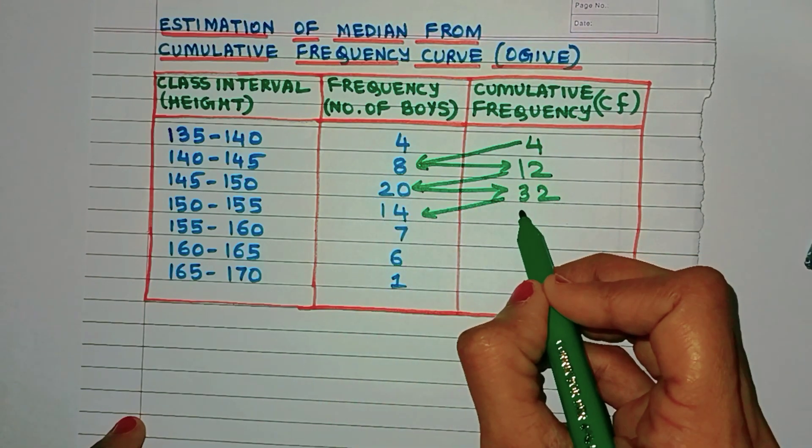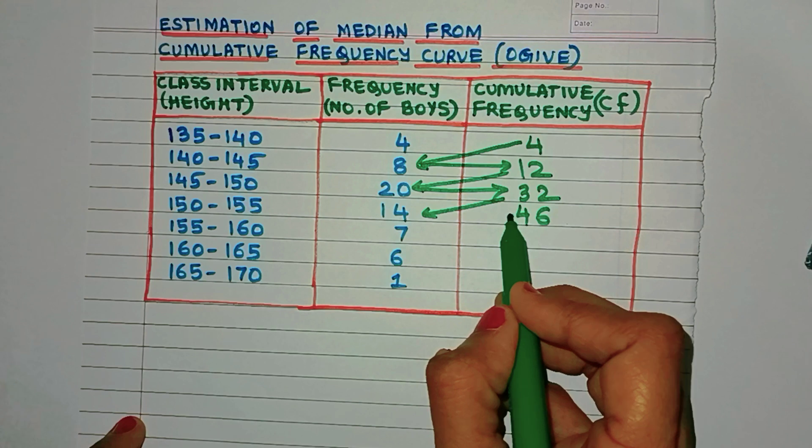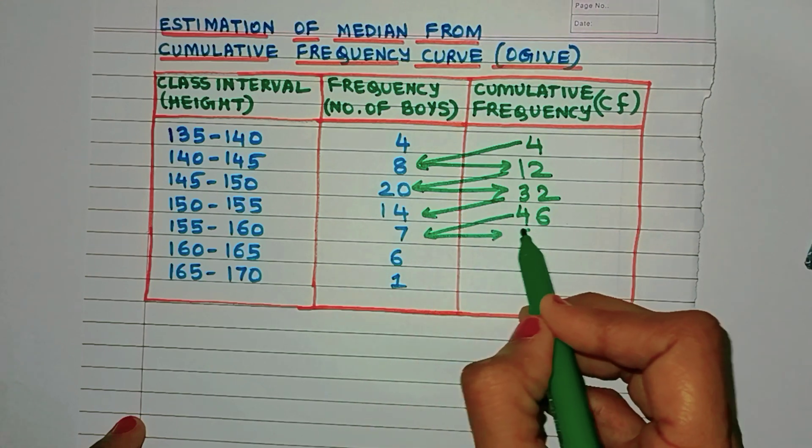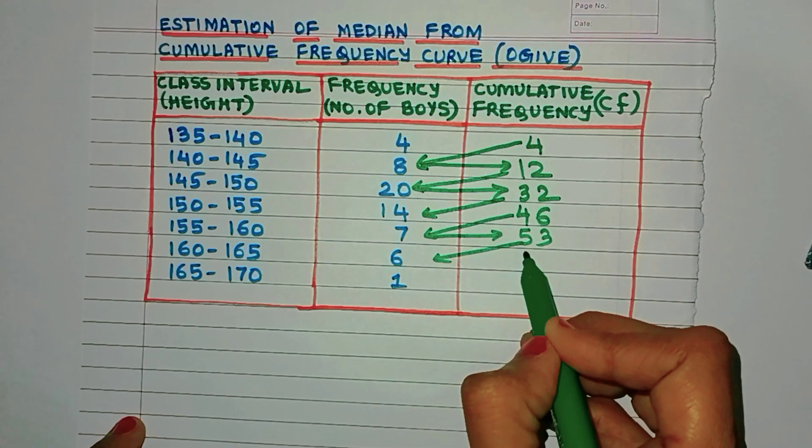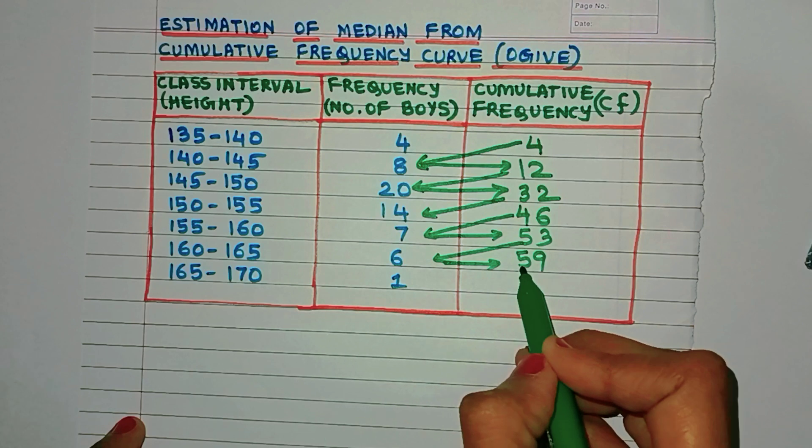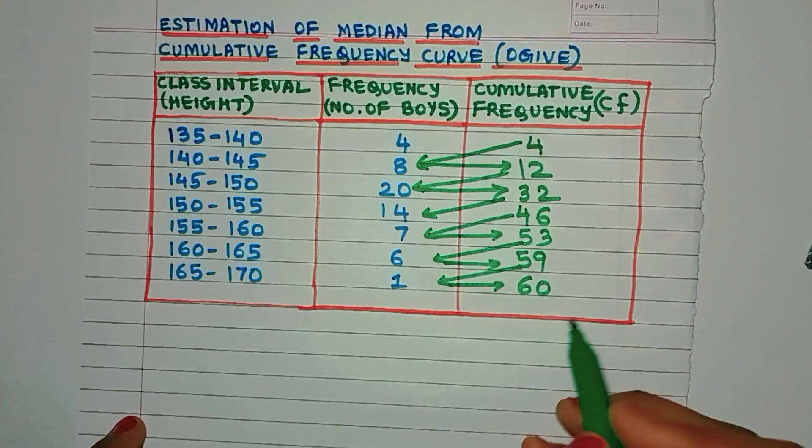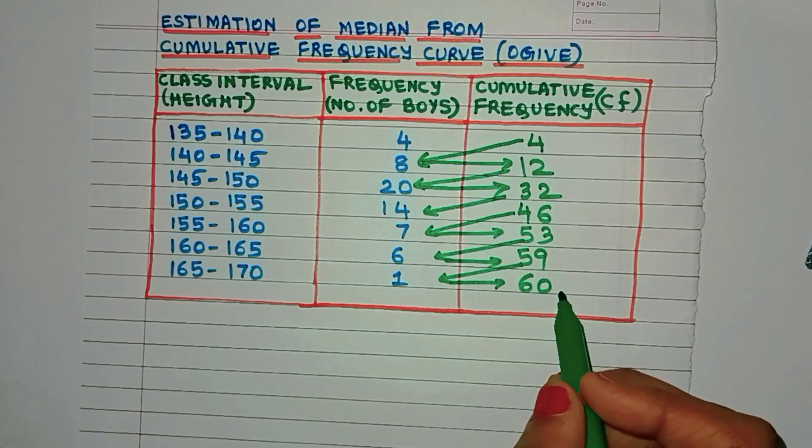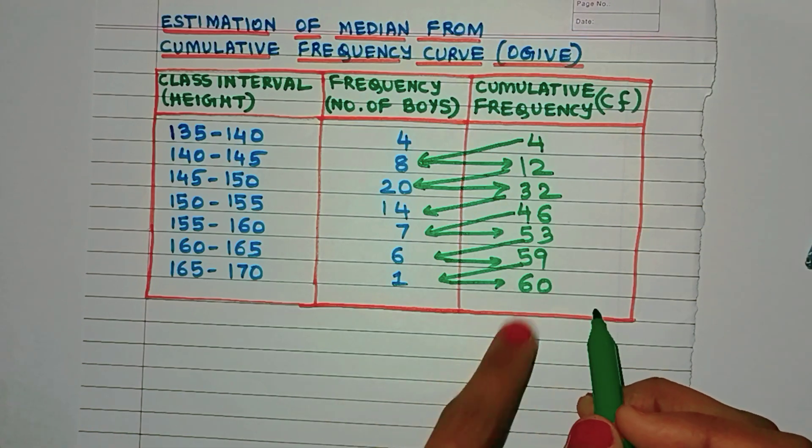In this way, 32 plus 14 will get us 46. Now 46 plus 7 will give us 53, this will give us 59, and 59 plus 1 will give us 60. That's it, very easy to get the CF column.